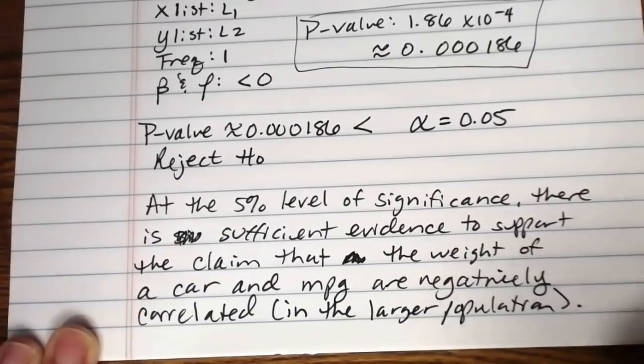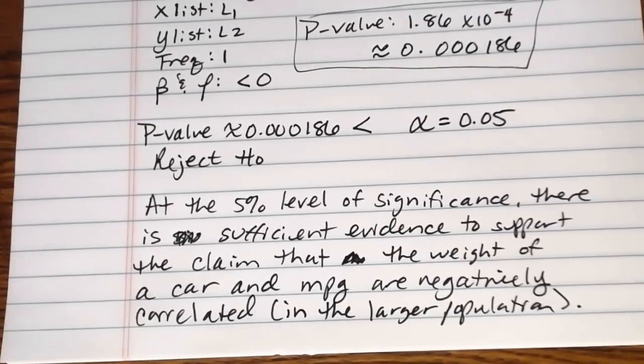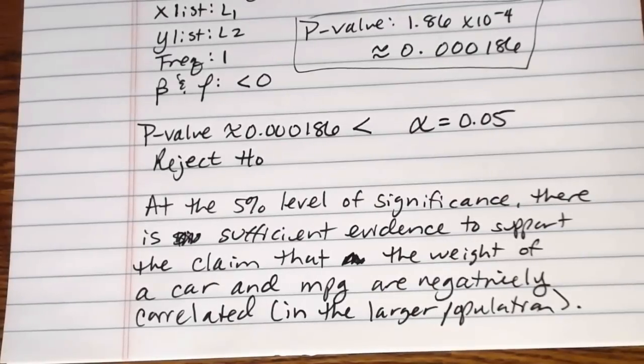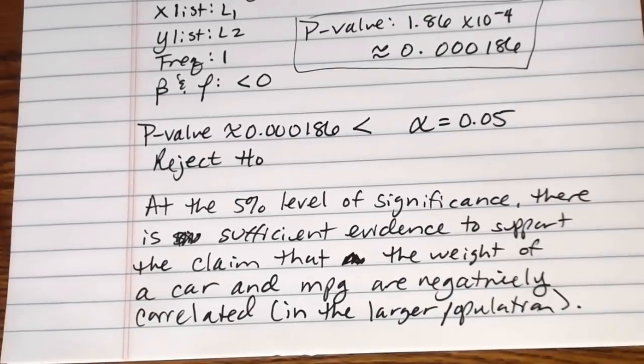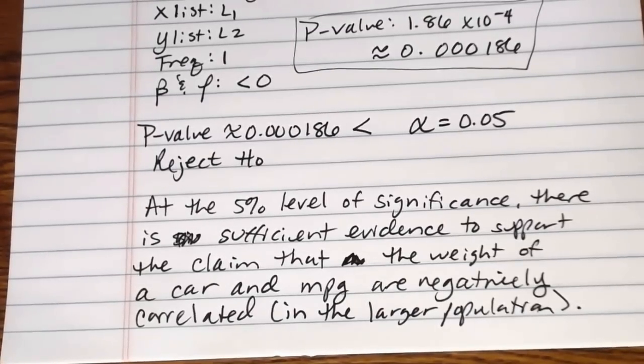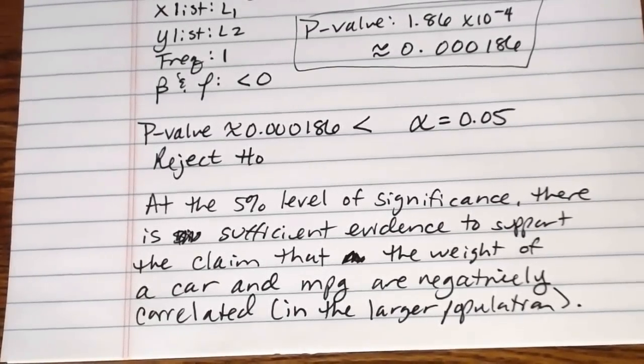And that is the idea with this type of hypothesis test. Now this hypothesis test also tests beta at the same time. Beta is the slope of the population regression line. That's why you see that line in your calculator about rho and beta. We won't really be talking about beta. The rho is the thing that I wanted you to get a sense of how to do the hypothesis test for.